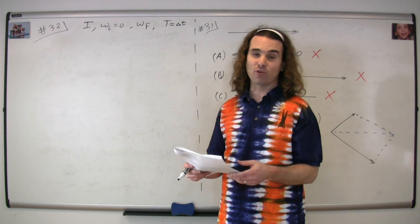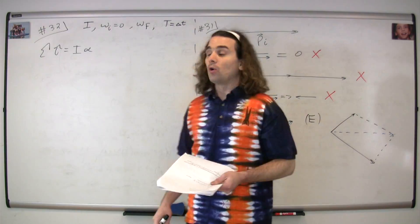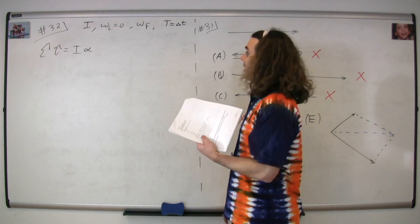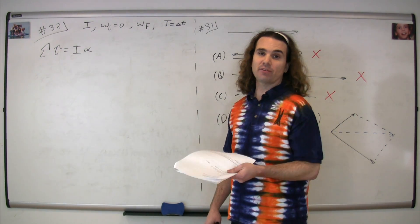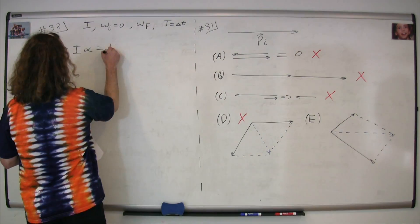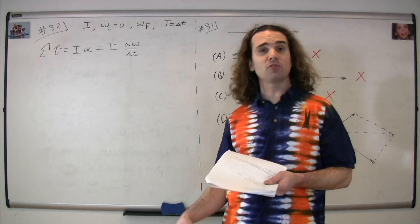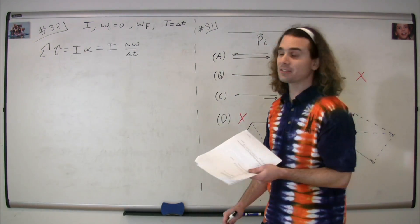We're going to use the rotational form of Newton's second law, where the net torque equals the moment of inertia times the angular acceleration. We're going to use the equation for angular acceleration, which is change in angular velocity over change in time. Now we're going to substitute in final minus initial for the change in angular velocity.